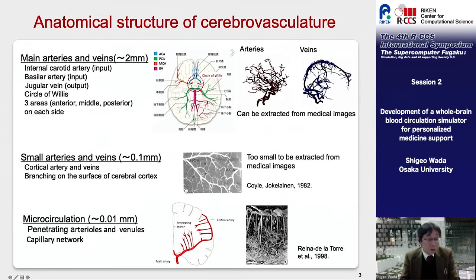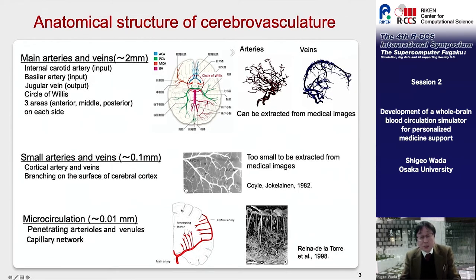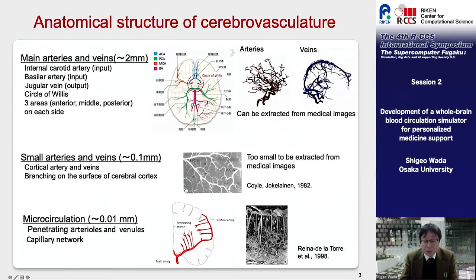The microcirculation connects arteries and veins via the capillary network existing in the cortex. In the whole brain scale modeling, this microcirculation system is treated as a concentrated element of flow resistance. I will talk about modeling and analysis of this microcirculation later.